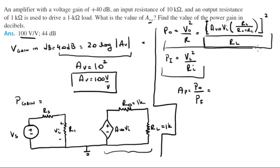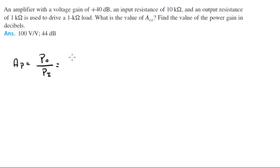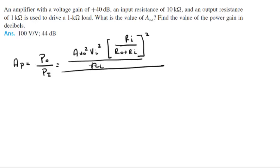So basically what I'm going to do is write this equation and this equation in the same fraction. The top is AVO² VI² times RI over (RO + RL)² all over RL. The bottom is VI² over RI. As you can see, the VI² terms cancel out.